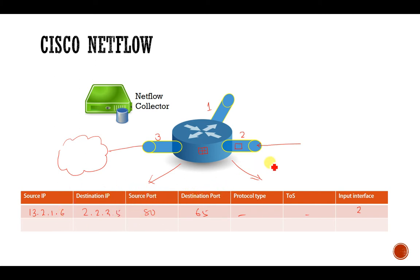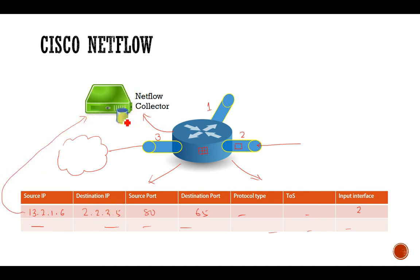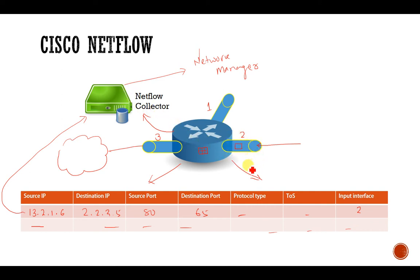As more packets are transferred through the device, additional values are recorded and stored in the cache memory. Once the cache memory fills up, the router transfers the data to the NetFlow collector, where data is transferred row by row. From the collector, the data may be sent to the network manager, who checks which interface the data is coming from, what type of data it is, whether it contains any errors or viruses, and may instruct the router to block certain data. This is how Cisco NetFlow works under the network management concept.